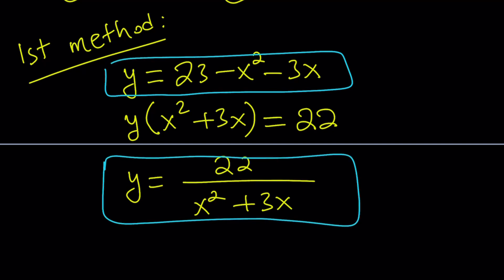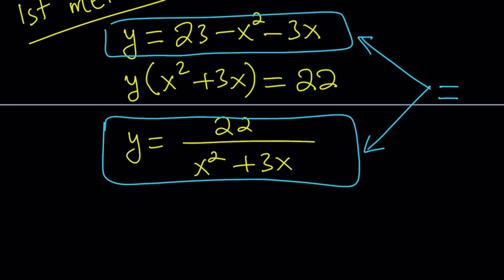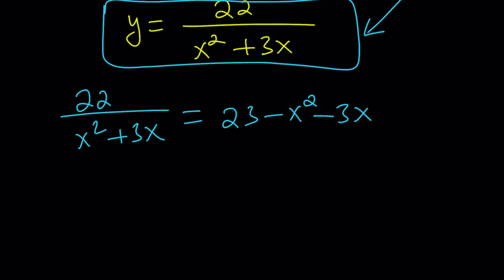Since they're both equal to y, if two things are equal to the same thing, then they are equal. So we can safely say that 22 divided by x squared plus 3x equals 23 minus x squared minus 3x. So here's what we can do. We can cross multiply and put it all together and come up with a hopefully nice equation.